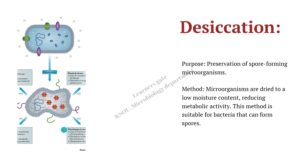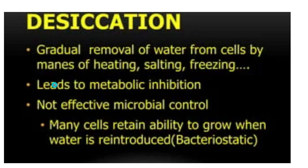Desiccation is a technique used to preserve spore-forming microorganisms. There are different bacteria which produce spores, and these microorganisms are preserved using desiccation. Microorganisms are dried to a low moisture content, reducing the metabolic activity. This method is suitable for bacteria that can produce spores — the bacteria gets dehydrated and loses its water content. Desiccation can be performed by different means: by heating, by salting, or by freezing.